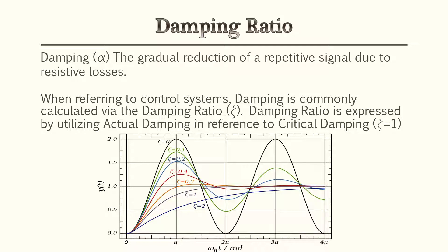The damping ratio is expressed by utilizing actual damping in reference to critical damping. Critical damping is when zeta — the Greek letter for z — is equal to one, and that's what you ideally want. We'll go over this more in later slides.